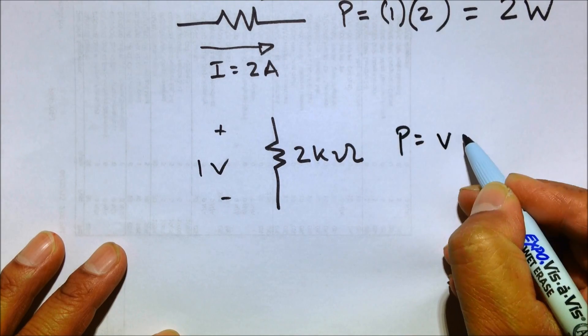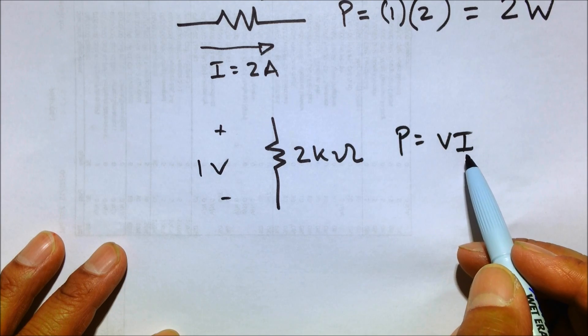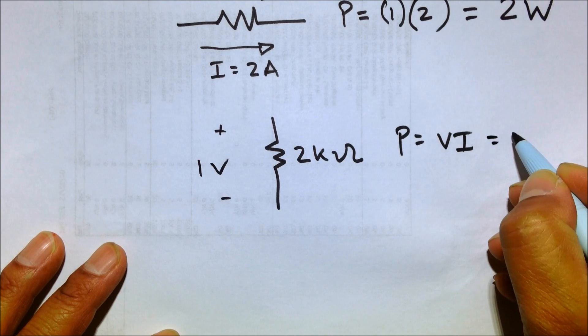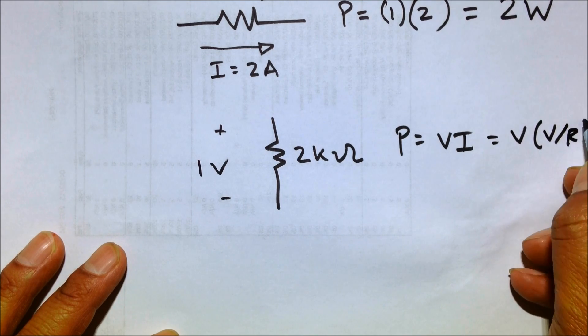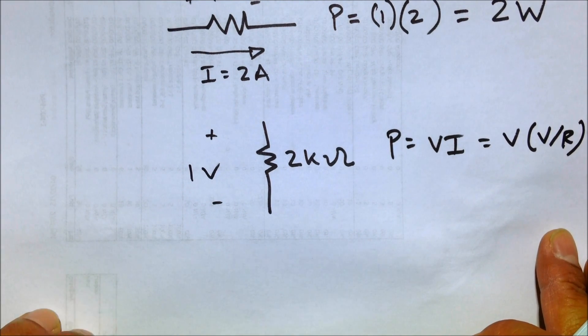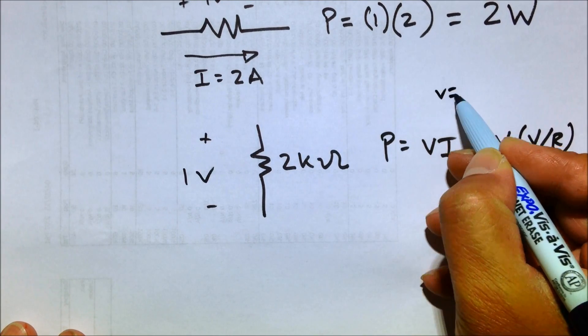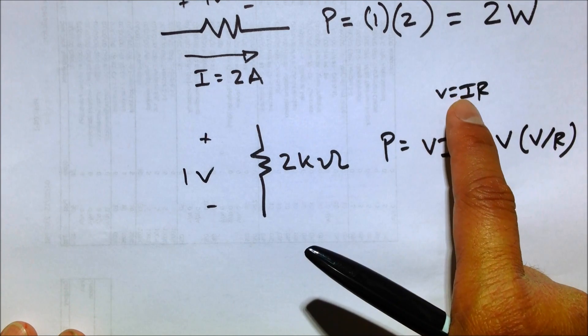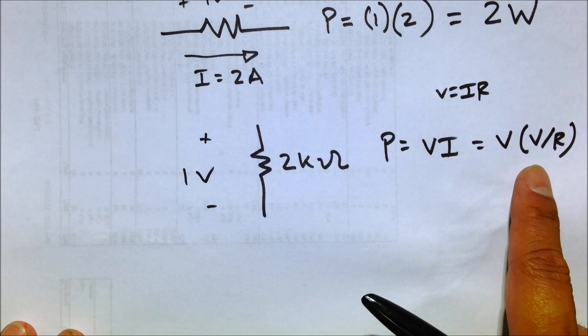Remember P equals VI. And we know from Ohm's law, V equals IR, that we can convert that. So I equals V over R using Ohm's law. V equals IR, so we're going to solve for I, isolate I on one side. So V divided by R equals I. So that's what we did there.